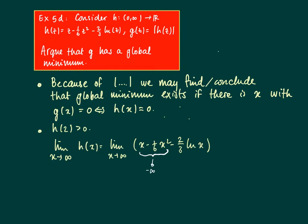X² wins against X, and ln(X) also goes to infinity; with the minus 2/3 coefficient, we go to minus infinity. So for X large enough, H will have negative values.